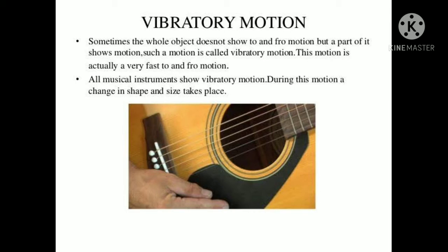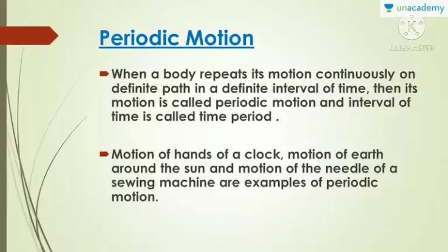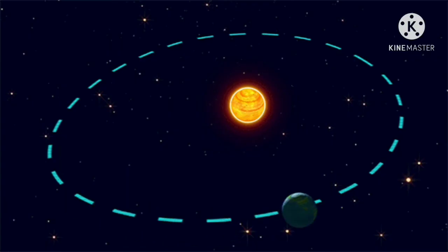All musical instruments show vibratory motion — it is a type of oscillatory motion, but when the to-and-fro motion is very fast, it is called vibratory motion. The fourth type is periodic motion: when a body repeats its motion continuously on a definite path in a definite interval of time, it is called periodic motion. The time should be the same — like the motion of the hands of a clock, or the motion of the Earth around the Sun.